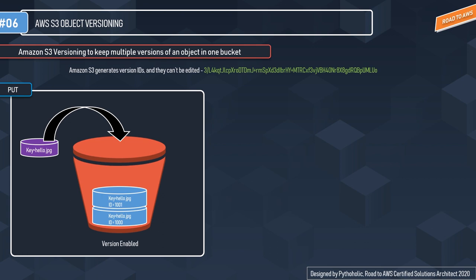Let's look at the visualization. We have a versioning-enabled bucket and we're going to upload an object — hello.jpg — using the PUT method. When you upload an object whose key already exists and versioning is enabled, the object will not be overwritten. Instead, it generates a new version ID for the same key. So here we have two objects with the same key but different version IDs: hello.jpg with ID 1001 as the latest version, and hello.jpg with ID 1000 as the older version. Both versions are available to us.